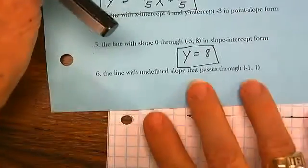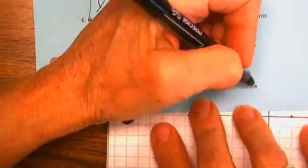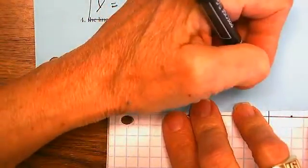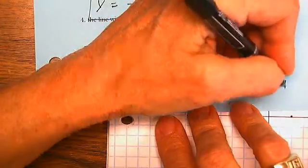The line with undefined slope passes through negative 1, 1. I draw a picture and I find x equals negative 1.